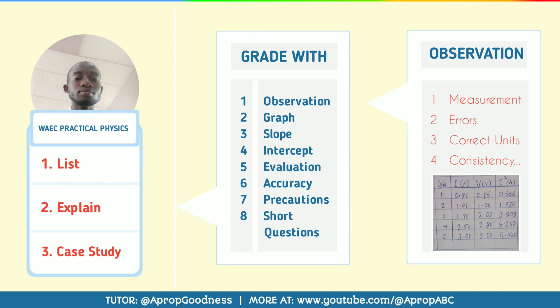When you use a four-figure table for evaluated measurement — when you divide and multiply — all of these require three decimal places. Also, while recording, there could be errors, so you must make sure that parallax error is avoided, gross error is avoided, and systematic error is avoided, as these could give you wrong results. The observation section involves the table where you record everything from the experiment, including correct units — make sure you are not writing centimetres where metres are required.